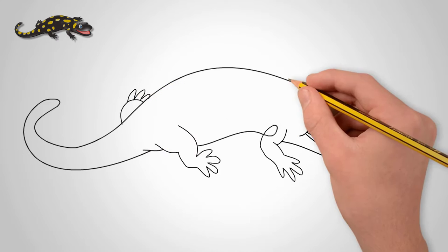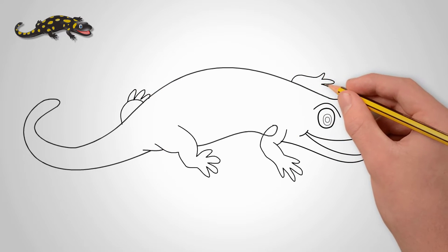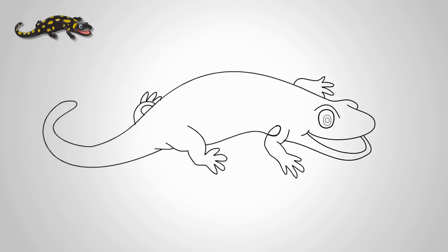Now draw ovals of different shapes and sizes all over the body. Our salamander has many spots on the body.